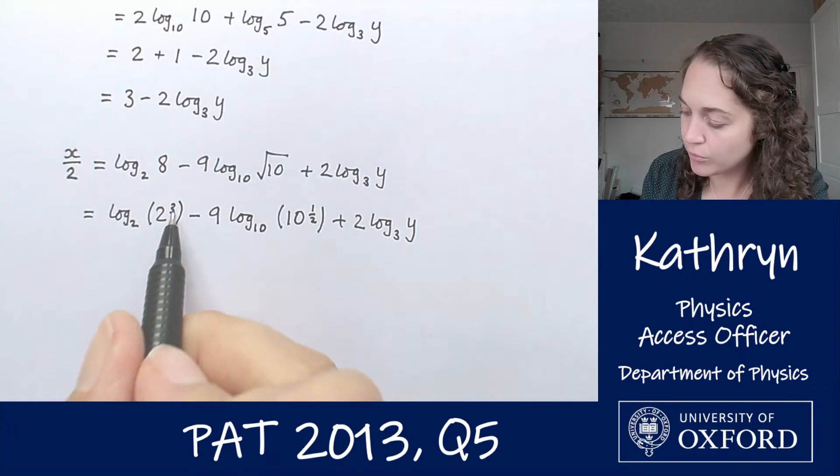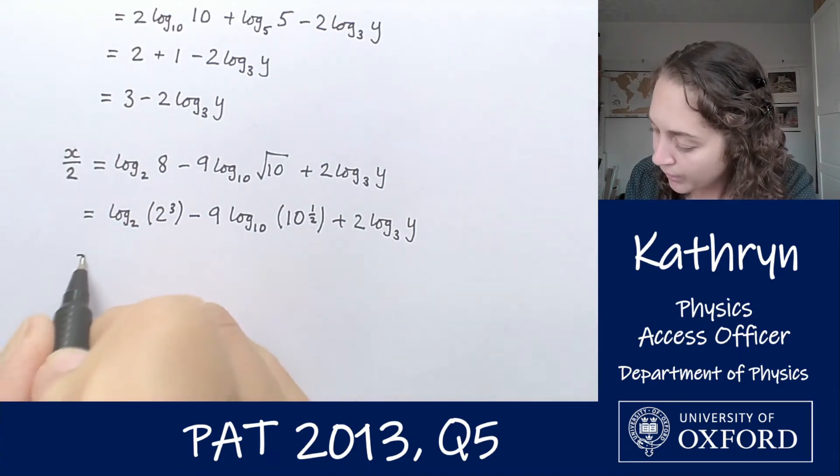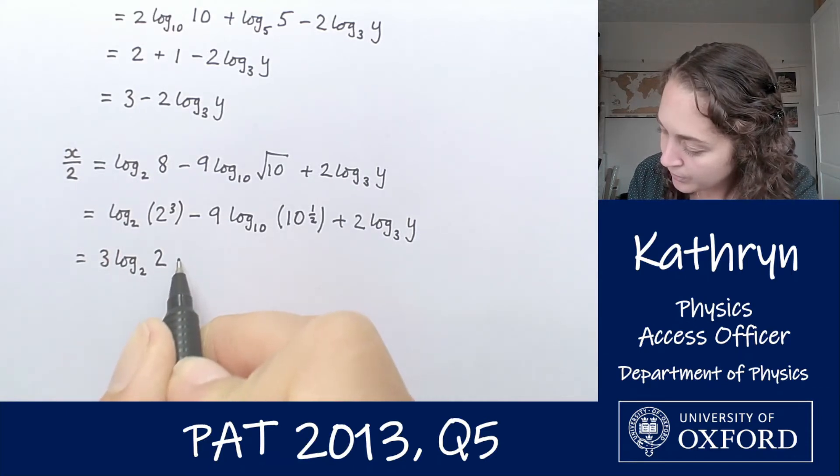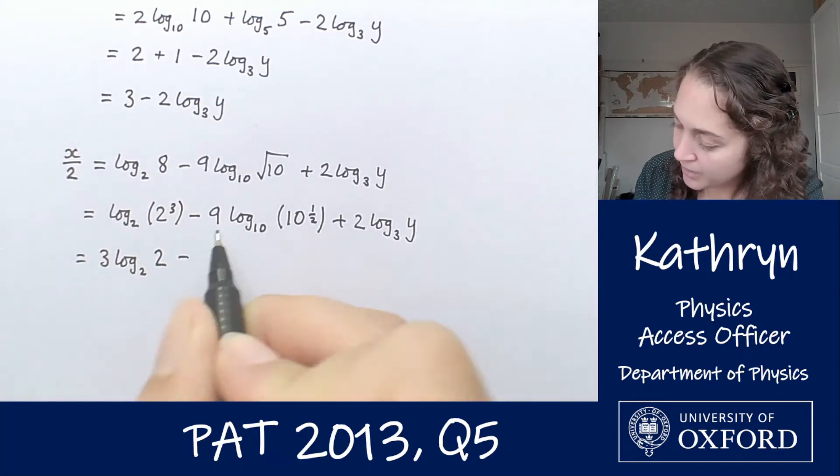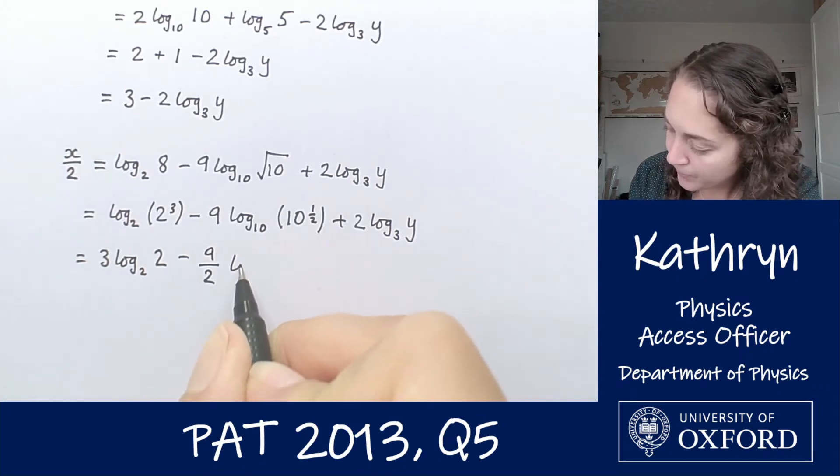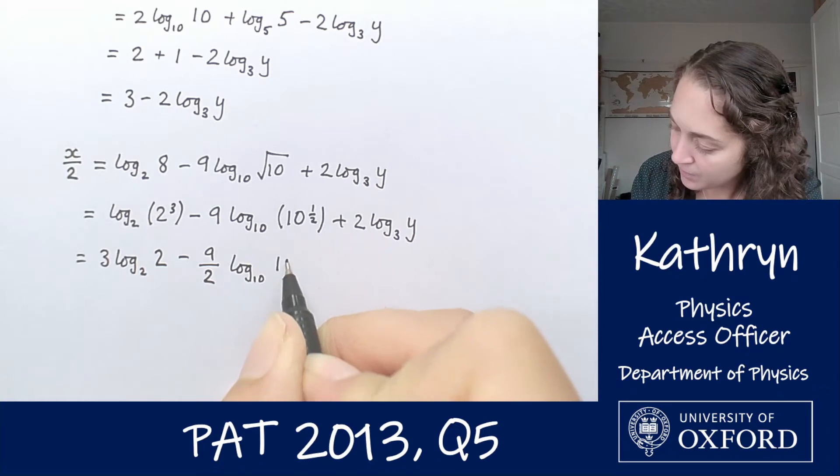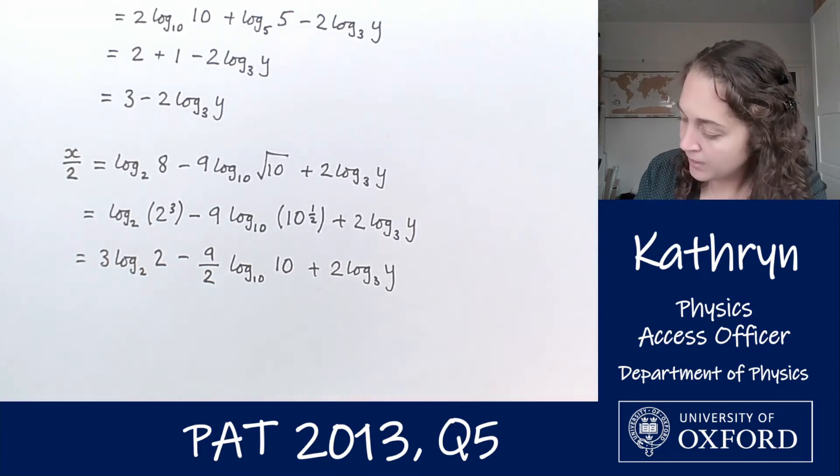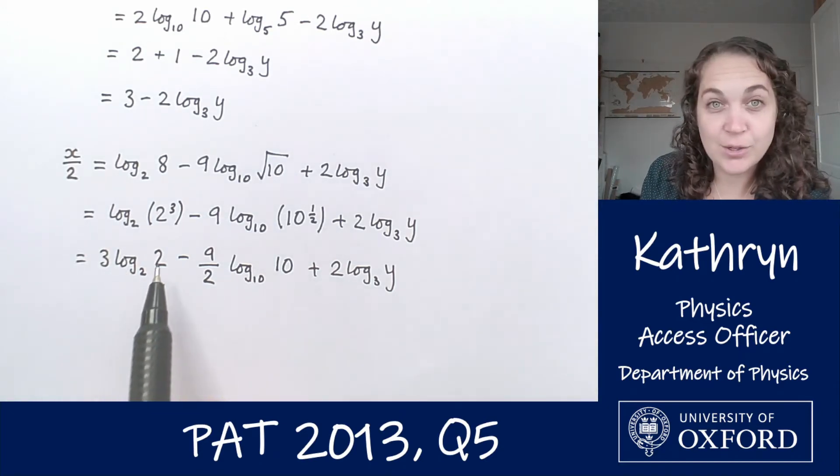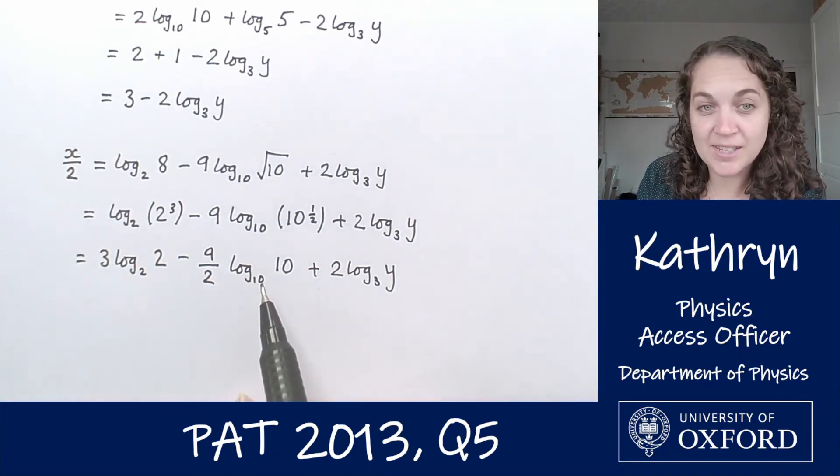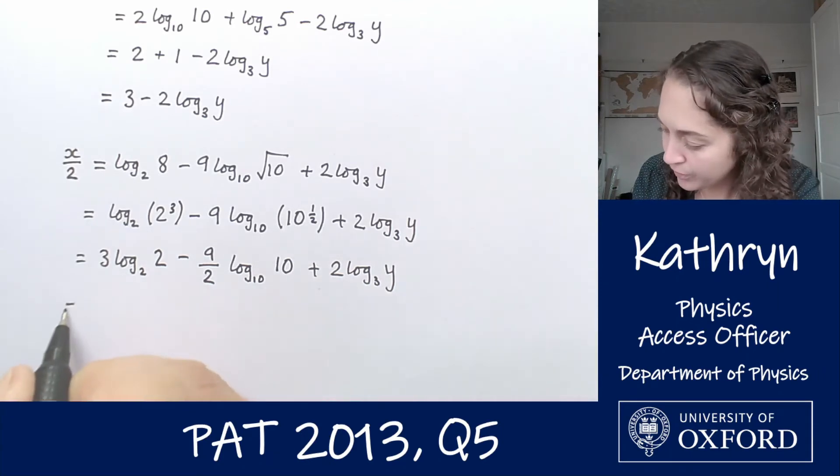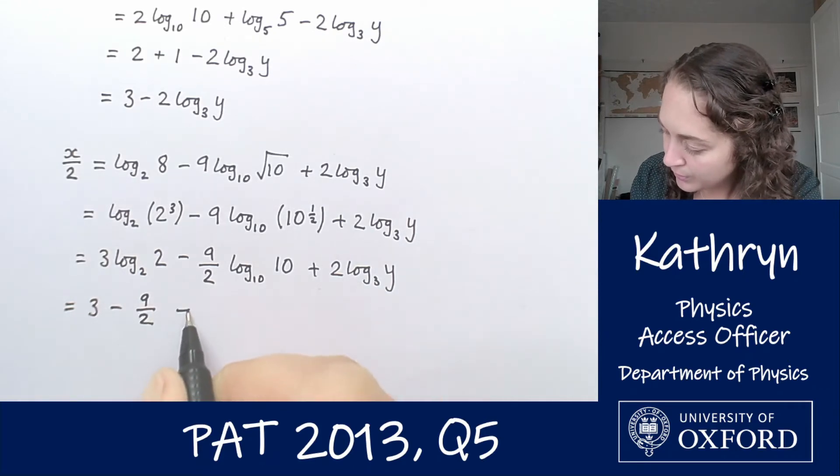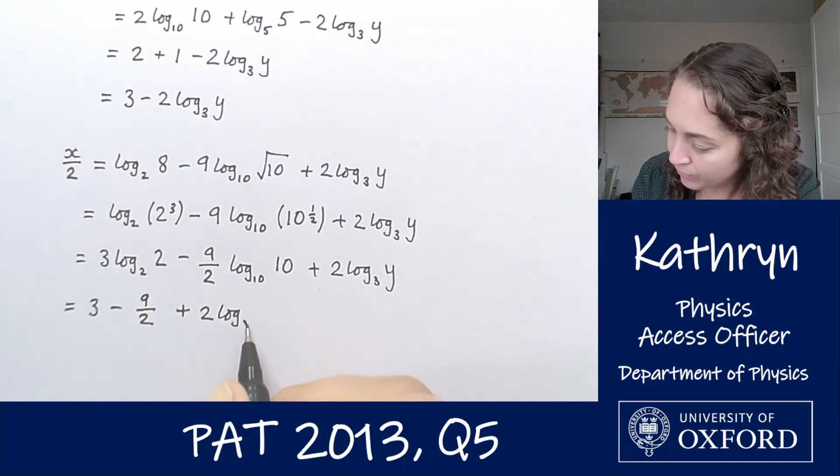Now doing the same thing using our log rule to bring the power down, we'll have 3 log base 2 of 2 minus 9 times a half, so 9 over 2 times log base 10 of 10 plus 2 log base 3 of y. Again, log base 2 of 2 and log base 10 of 10 are both 1, so we've got 3 minus 9 over 2 plus 2 log base 3 of y.